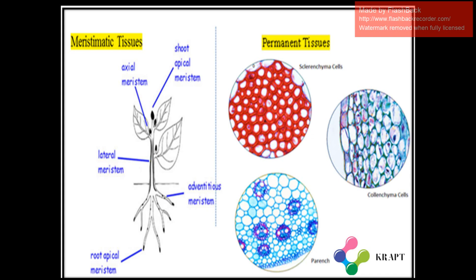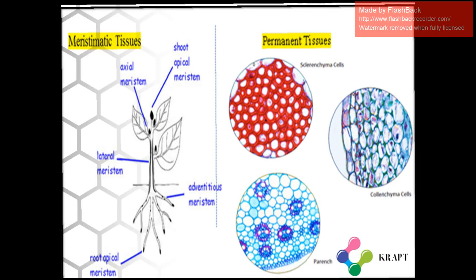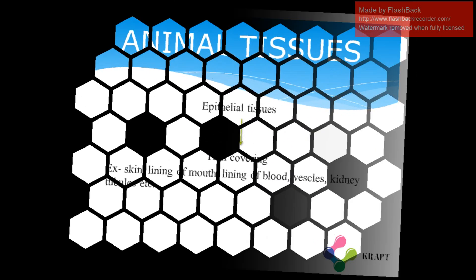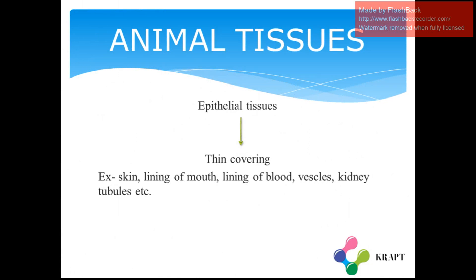We have now learned about meristematic tissues and permanent tissues. Now let us learn about animal tissues — humans also come under animals. Animal tissues, like plant tissues, are divided into several types. The first one is the epithelial tissue, which is the thin covering of the body that gives a protective layer. Examples include skin, lining of the mouth, and lining of blood vessels. They protect our body — for example, skin protects the muscles underneath it.